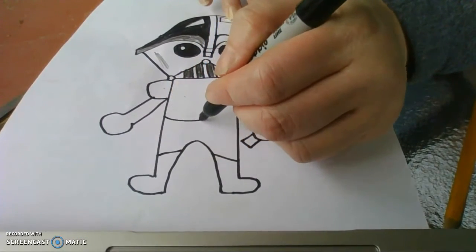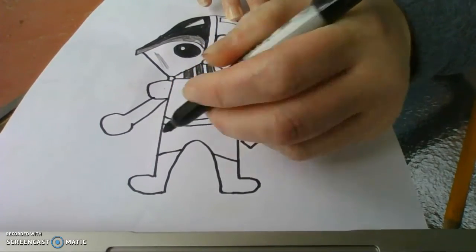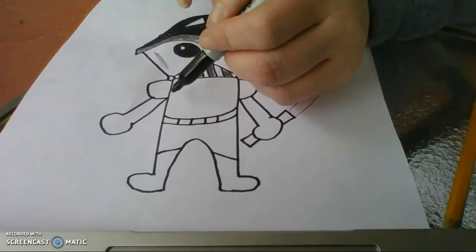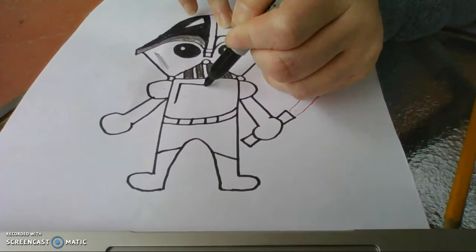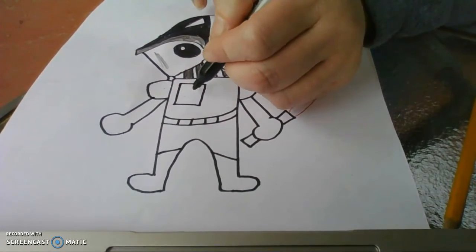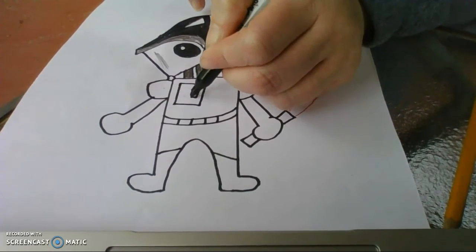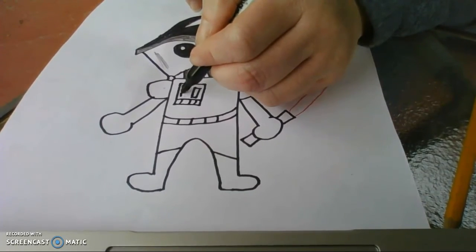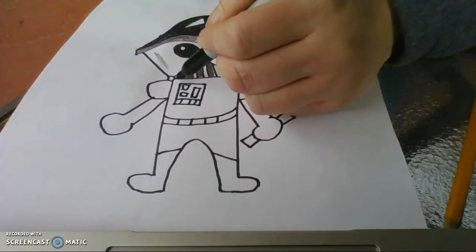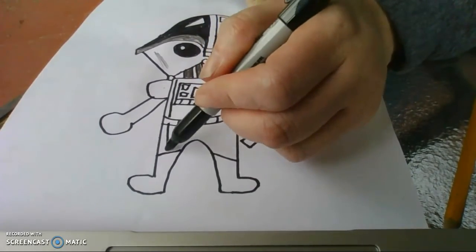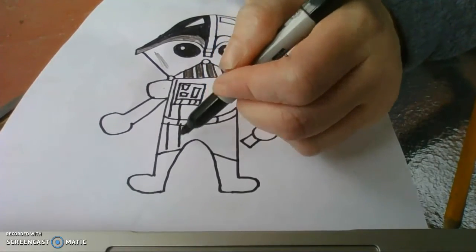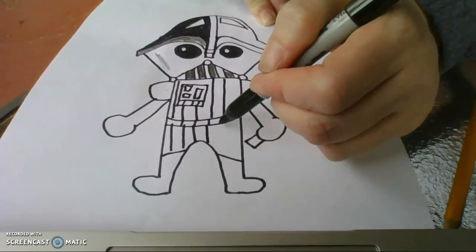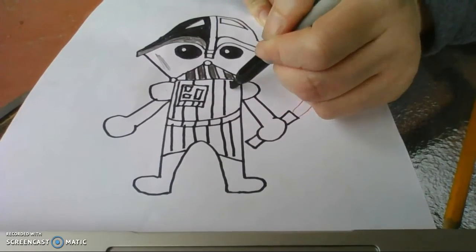Right here at the bottom, I'm going to make his belt in the middle here. Do lines. Right here on this side, this is going to be where Darth Vader's buttons are. It's going to be a long rectangle. Then I'm just going to make two small squares here. Then right here, I'm going to draw lines. Darth Vader's outfit.